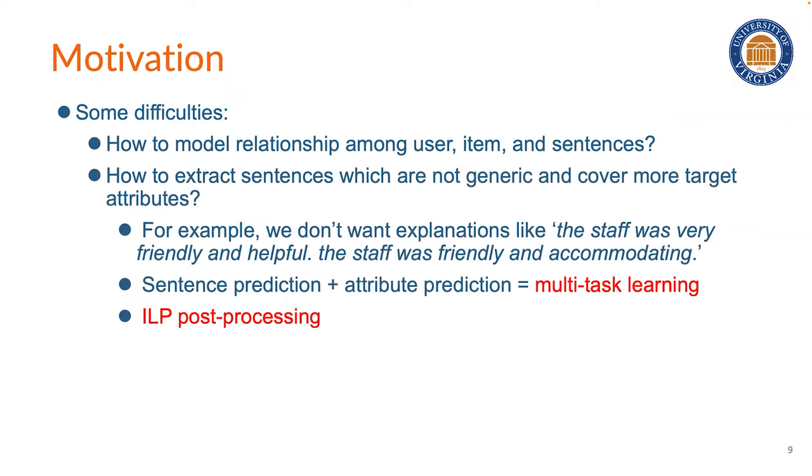The second difficulty is how to extract sentences which are not generic and also cover more target attributes. In order to select sentences which match the target attributes, we combine the task of sentence prediction with attribute prediction and use multi-task learning. In order to construct explanations with less duplicate content, we also add an integer linear programming post-processing to synthesize explanations. With this in mind, let's take a look at the details of our model.